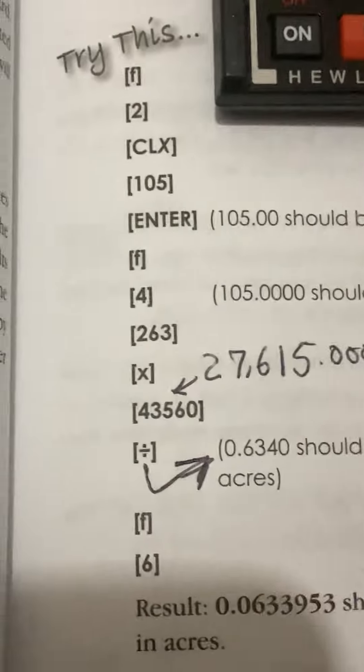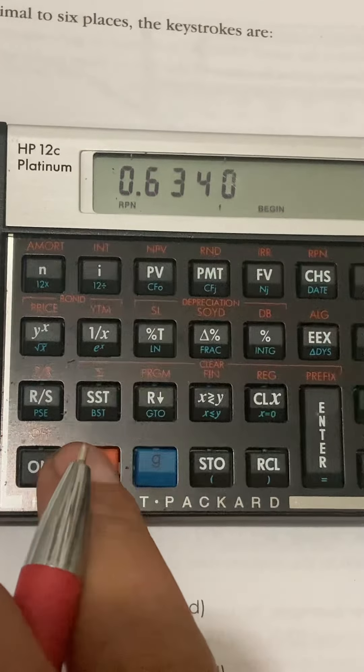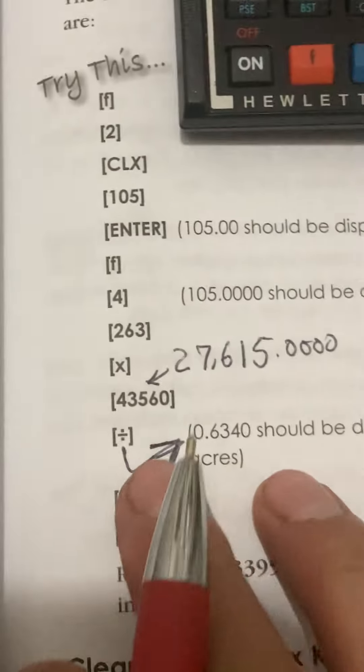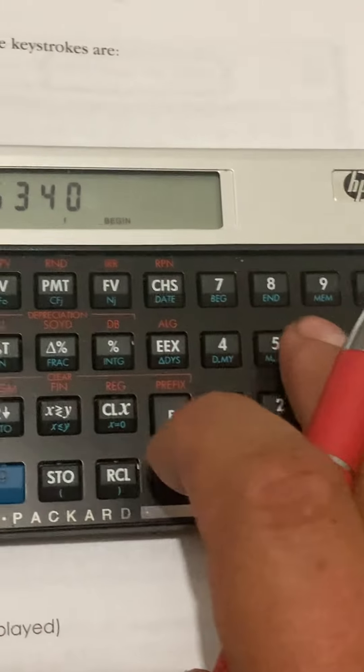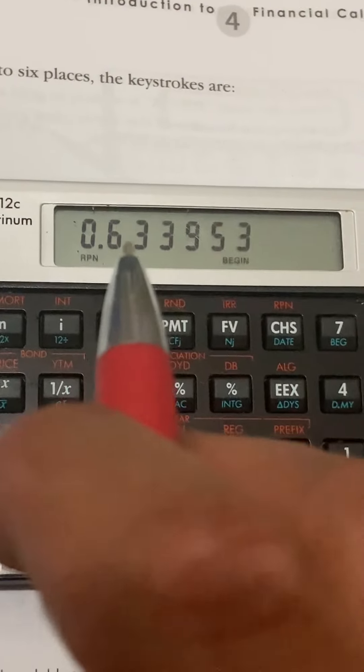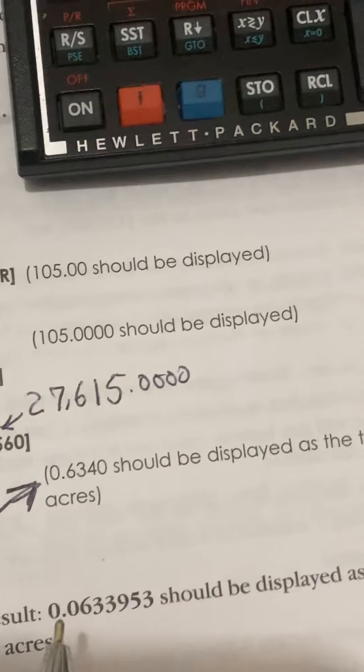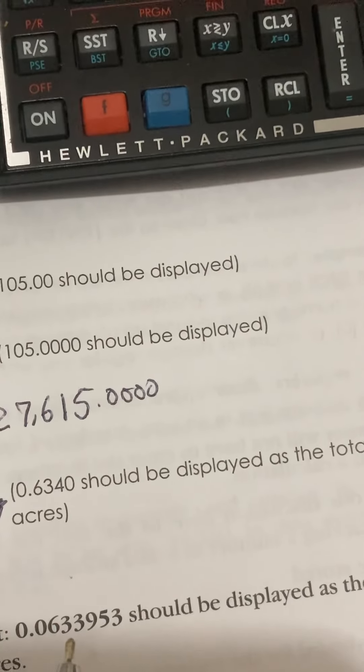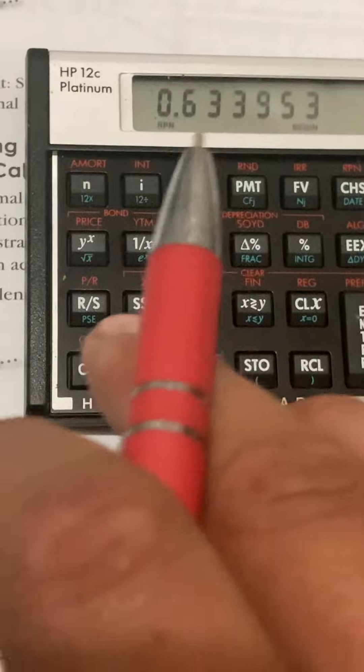There you go. Now press the F gold prefix key. There it is. Now press the number six. You can see now it changed from 0.633953. Result. 0.633953 should be displayed as the total site area in acres. And there it is.